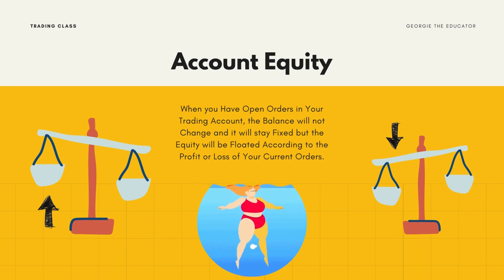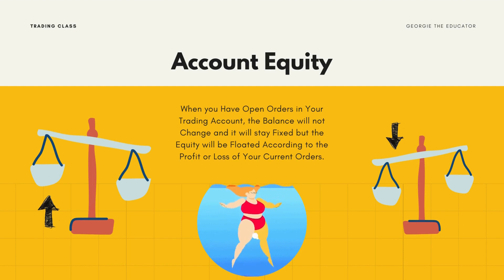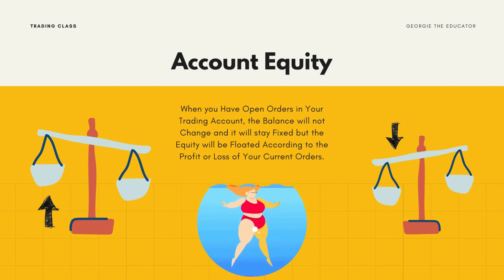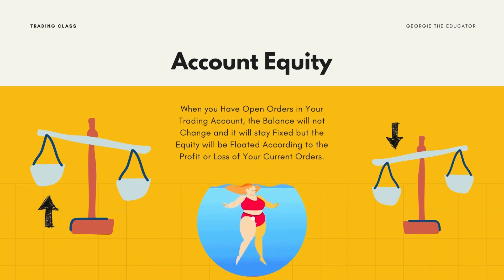However, if your open positions are at a profit — say $20 profit — your account equity will be your account balance plus the floating profit of $20, making your account equity $120.